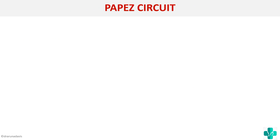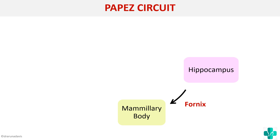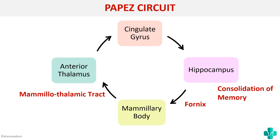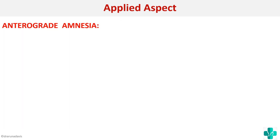The major circuit that helps this process is called the Papez circuit. The hippocampus connects to the hypothalamus or mammillary body via the fornix, then through the mammillothalamic tract information passes to the anterior thalamus, and from the anterior thalamus to the cingulate gyrus, which passes the information back to the hippocampus. This circuit is responsible for consolidation of memories. You can remember it as MATCH: Mammillary body, Anterior thalamus, Cingulate gyrus, Hippocampus.